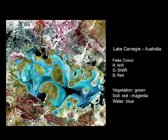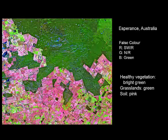This is achieved by selecting which colours outside of the visible range to display as those visible colours. Finally, here we have an example from Esperance in Australia — another false colour image. The healthy vegetation is displayed as bright green, grasslands as a slightly different shade of green, and exposed soil as a very vibrant pink. This is achieved by displaying shortwave bands in red, a near-infrared band in green, and the green band as blue.